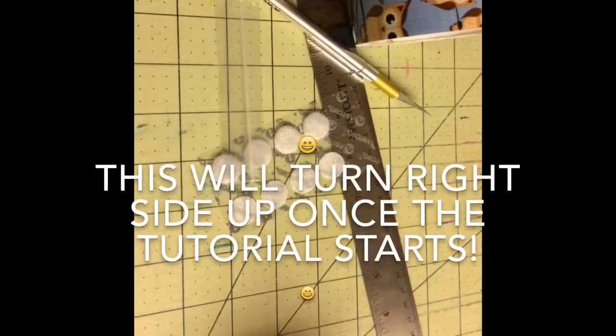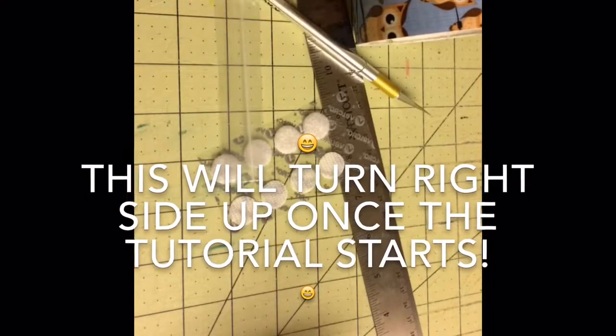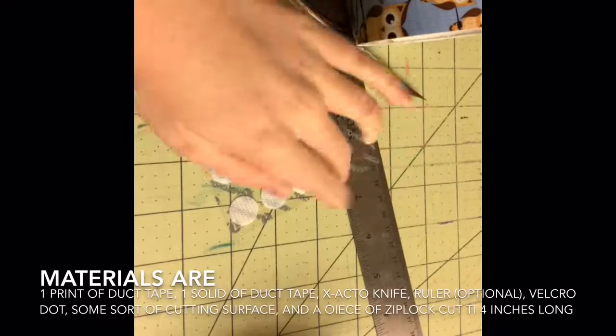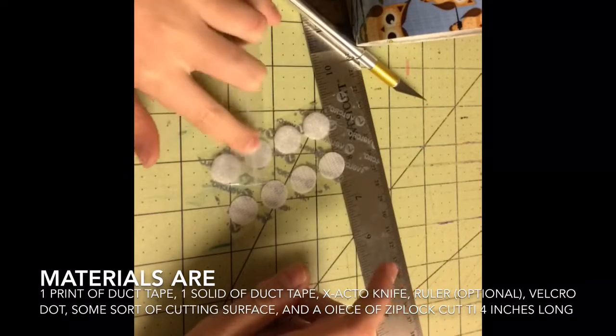The materials you will need today are two colors of duct tape, an exacto knife, ruler, cutting surface, ziplock cut to four inches, and a dot of velcro.